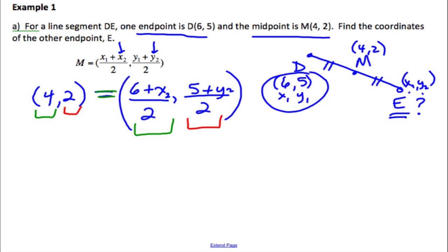So what I'm going to do, I'm going to take the 4 and I'm going to set that equal to 6 plus X2 divided by 2. Okay, so those are just the X values from the ordered pairs.